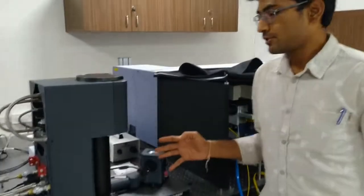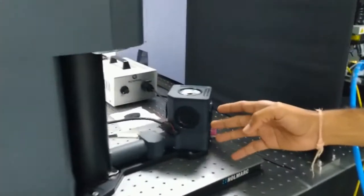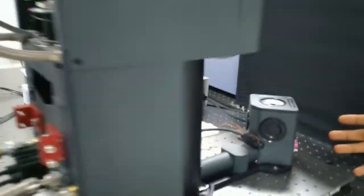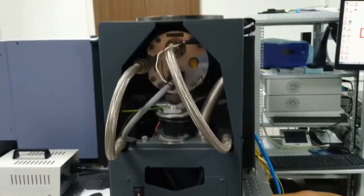This is the cryostat setup we have installed in our lab. This setup is capable of reaching 4 Kelvin temperatures using closed loop liquid helium cycling. This equipment is suitable for optical, electrical and magnetic measurements. For optical measurements, this is integrable with the current Raman setup.